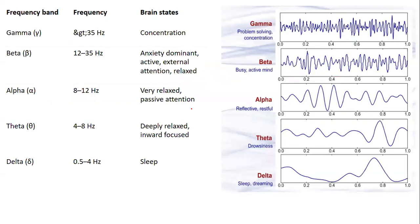In EEG, we assess different types of waves including gamma, beta, alpha, theta, and delta — these represent different frequencies in the brain. The frequency of gamma waves is above 35 Hz, whereas delta waves have a frequency of up to 4 Hz.